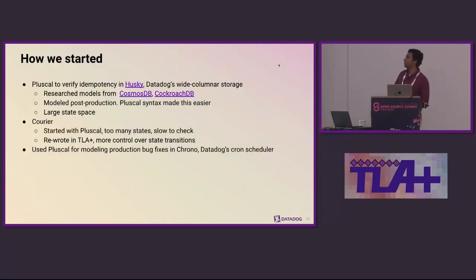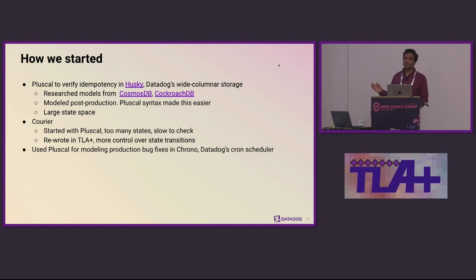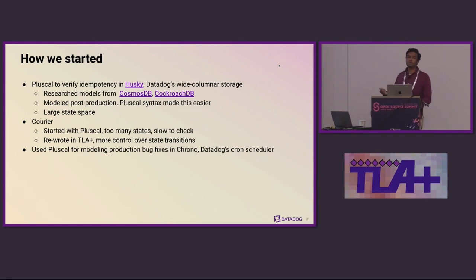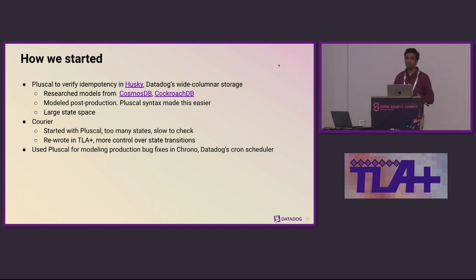Courier is not the first system that used formal modeling at Datadog. We used PlusCal to verify idempotency properties in Husky, which is Datadog's wide-column storage. Notably, Husky was modeled after it was already in production, and the PlusCal syntax made it easy to keep the model consistent with the implementation. For Courier, we started with PlusCal but it became cumbersome too quickly — too many states and model checking became very slow — so we rewrote the model in TLA+, giving us more control over state transitions. I also used PlusCal to model a replication bug in Chrono, Datadog's cron scheduler, modeling just enough to show the existence of the bug and the effectiveness of the fix.